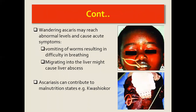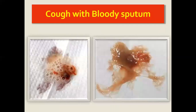Wandering ascaris may reach abnormal locations and cause acute symptoms like vomiting of worms, which may also affect breathing, causing breathing difficulties — worms can come out of the mouth and nose. Migration into the liver may cause liver abscesses. Ascaris can also cause nutritional problems by damaging the mucosa, leading to protein and energy malnutrition states like kwashiorkor and marasmus.